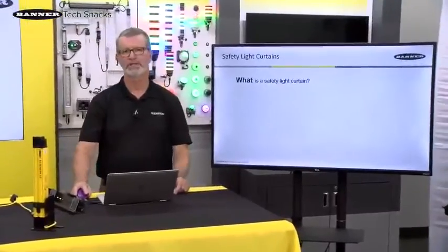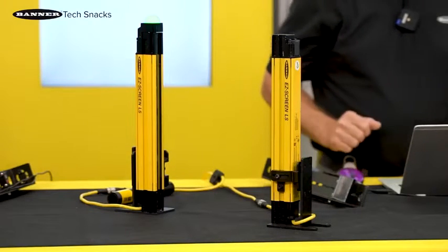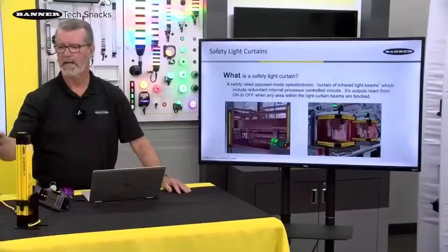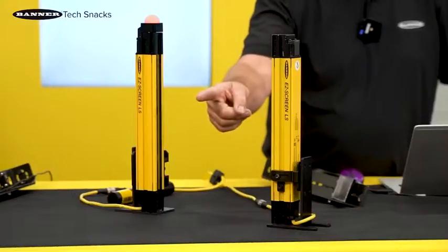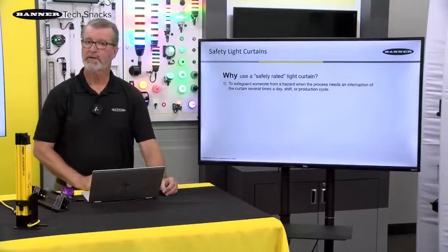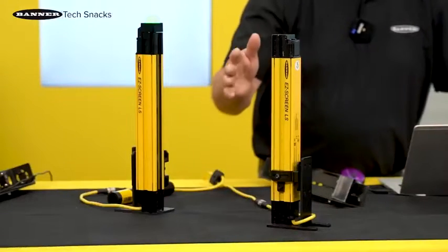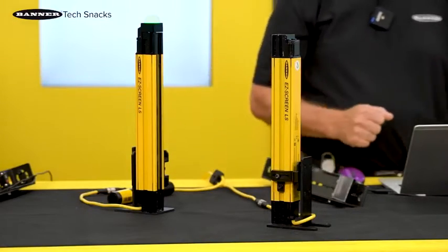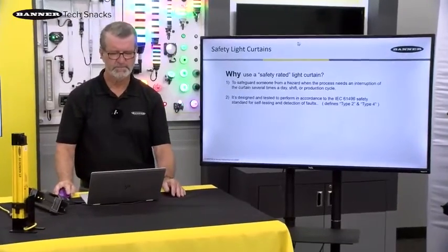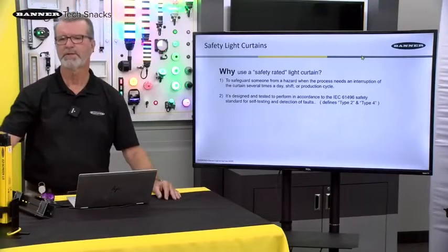When we're talking about the question of what is a safety light curtain, really all it is is a curtain of light, made of opposed beams that include redundant circuits within a safety-rated light curtain. It's going to react from on to off whenever you block any section of that beam of light. So I have one in front of me. Why use a safety-rated curtain? This is meant to safeguard somebody in that area who needs to either reach through to load parts or whatever the case may be, and it's just meant to interrupt the circuit until they clear that curtain again. It's designed and tested to meet all of the safety standards, control reliability, and international standards by having those redundant circuits in there.